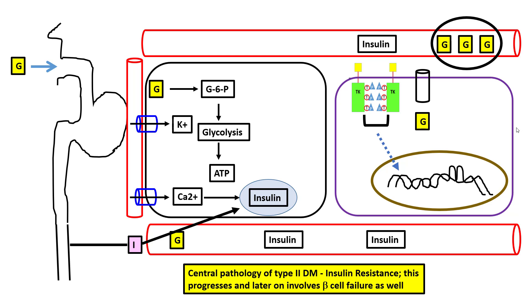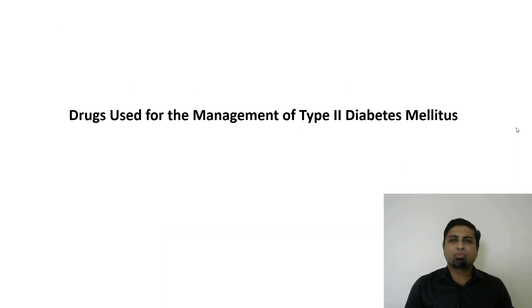This insulin resistance occurs initially during the first few years of diabetes. We need to remember that diabetes mellitus is a progressive disease, and in the years to come, beta cell failure can be expected to occur as well. We are now in a position to discuss the drugs used in the treatment of type 2 diabetes mellitus, excluding insulin.